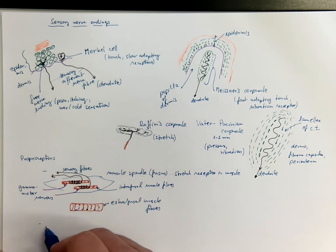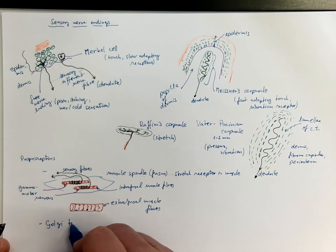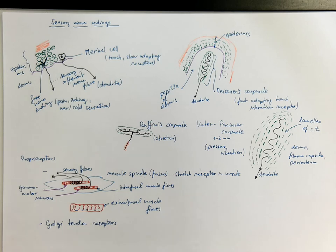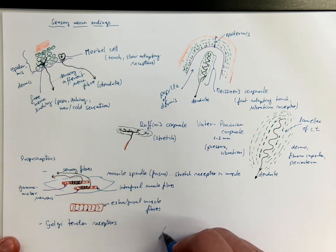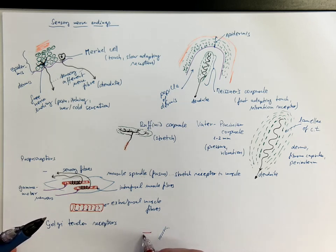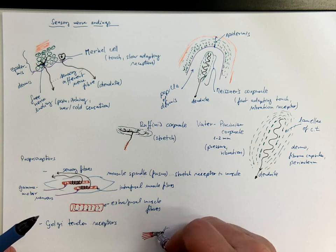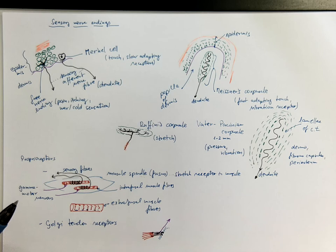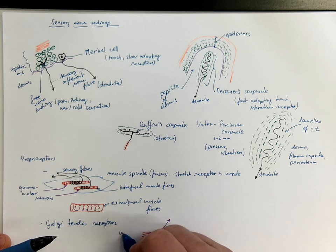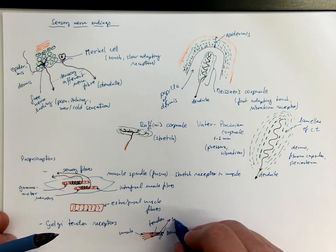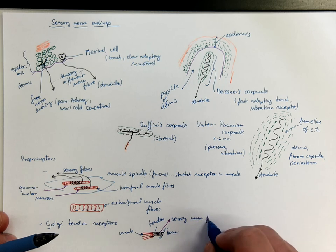Another proprioceptor would be the Golgi tendon receptors. And simply said, if this would be the bone surface and this would be the insertion of muscle, then the tension in the tendon part is monitored again via these Golgi tendon receptors and information to the nervous system. And here sensory nerve fiber.